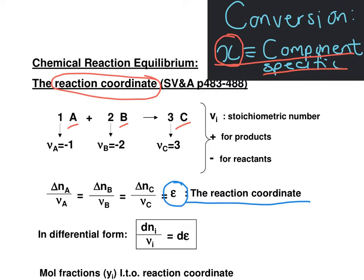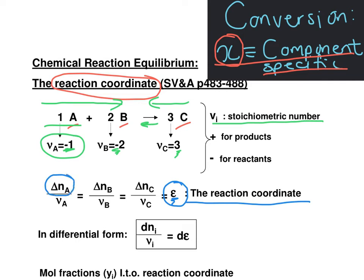First, some definitions. The stoichiometric number of each component is very important. It is negative for those expressed as reactants. We read our reaction systems from left to right — this doesn't mean the reaction cannot take place from right to left, since we are considering equilibrium reactions. However, the protocol is we read from left to right: stoichiometric numbers are negative for reactants as written and positive for products. The stoichiometric number is then the change in the number of moles of that component in that reaction divided by its stoichiometric number.